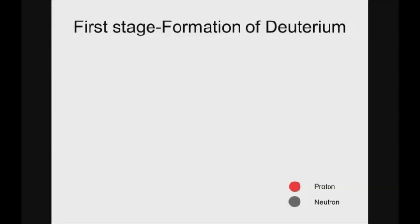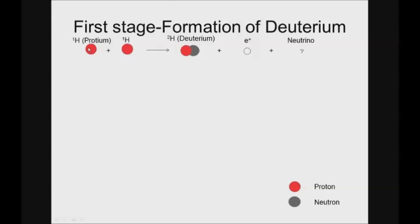Now we will go through the three steps in more depth. In the first step, two protium or hydrogen-1 nuclei, each containing one proton, react, forming a deuterium nucleus — or hydrogen-2 nucleus — with one proton and one neutron. Additionally, this nuclear reaction produces a positron and a neutrino. Note that protium and deuterium are both isotopes of hydrogen. In this nuclear reaction, a process called beta plus decay took place.